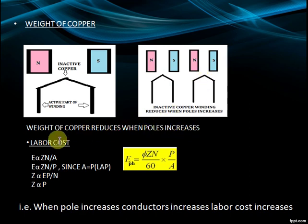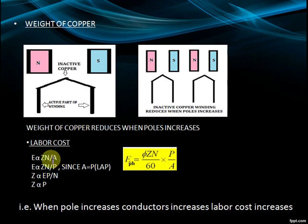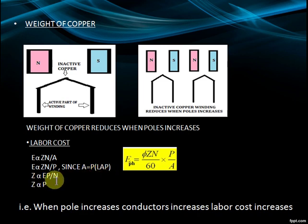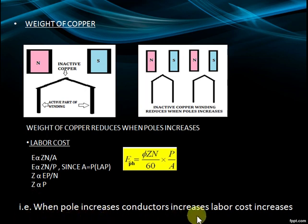Labor Cost: We know EMF = Phi*Z*N / 60 * P/A. From this, E is proportional to Z*N/A, and since A = P for a lap winding, E is proportional to Z*N/P. Therefore Z is proportional to E*P/N, and thus Z is proportional to P. When poles increase, conductors increase, and thus labor cost increases.